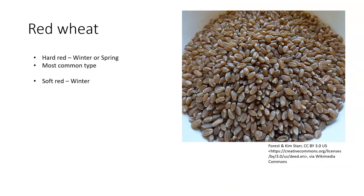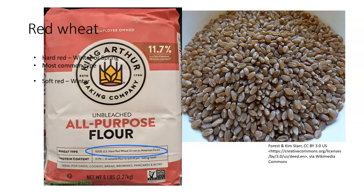Wheat is often grouped into red wheat and white wheat. The difference is in the color of the caryopsis. Red wheat has a redder color to the seed coat, which creates a difference in taste and use. Red wheat is grouped into either spring or fall depending on the variety. Soft red wheat is planted in the winter and has good milling and baking characteristics; it is used for crackers, pretzels, pastries, cookies, and flatbread.